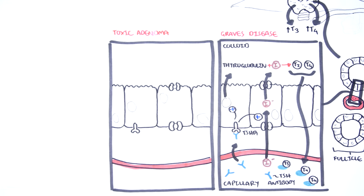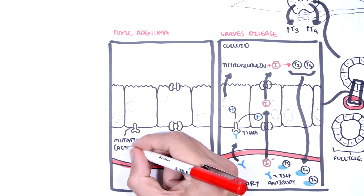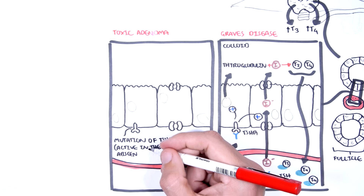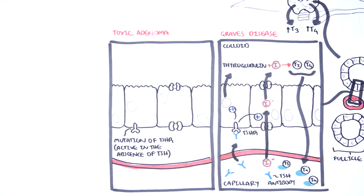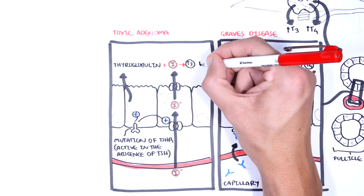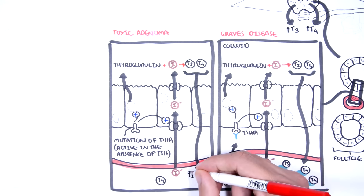Another cause of hyperthyroidism is toxic adenoma or toxic multinodular goiter. In this case, the nodules can initially be non-toxic, but over time they can undergo genetic mutations causing an abnormal thyroid-stimulating hormone receptor. The mutated TSH receptor becomes autonomous — it can activate by itself in the presence or absence of TSH. This means more thyroglobulin and more iodine in the colloid, resulting in more T3 and T4 entering circulation and causing hyperthyroidism.